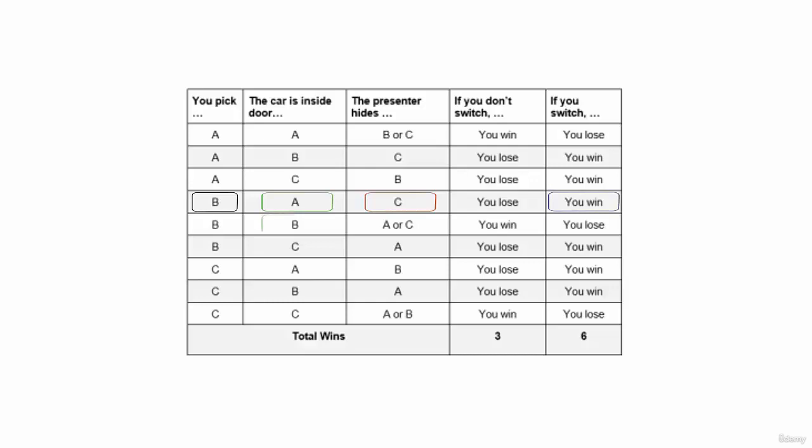If the car is inside door B, the presenter will hide either doors A or C. And you win only if you don't switch.